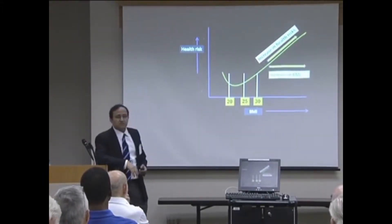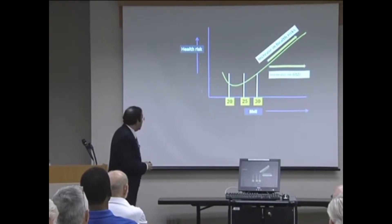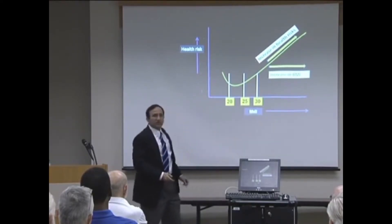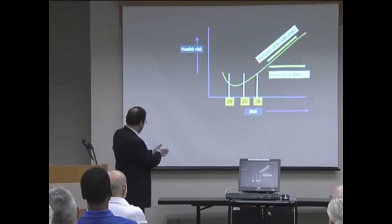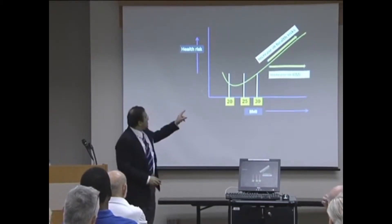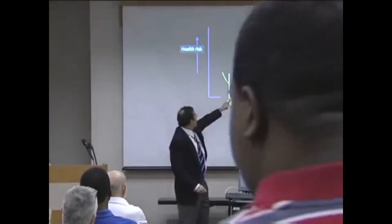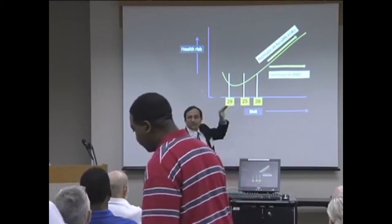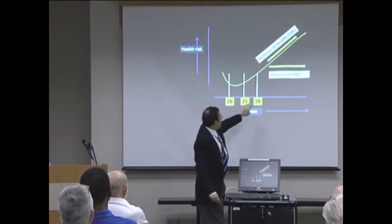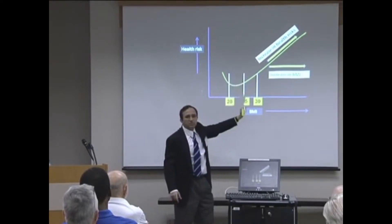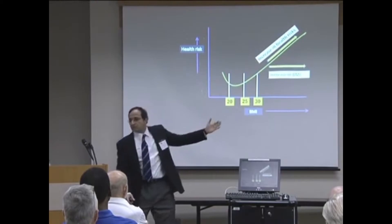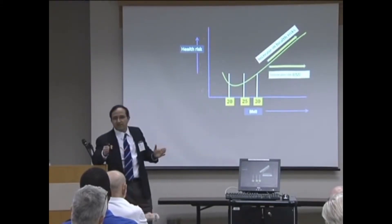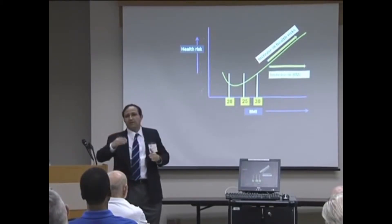So now, why the cutoffs? Why 20 and 25 and 30? Here's the reason. If you plot a graph of health risk on one axis and BMI on the x-axis, what you get is a J-shaped curve. You will notice your health risk is the lowest between 20 and 25. As BMI crosses 25, health risk increases. And if you cross 30, health risk really takes off. That's where those cutoffs come from. Between 25 and 30 is considered overweight, and above 30 is considered obesity.